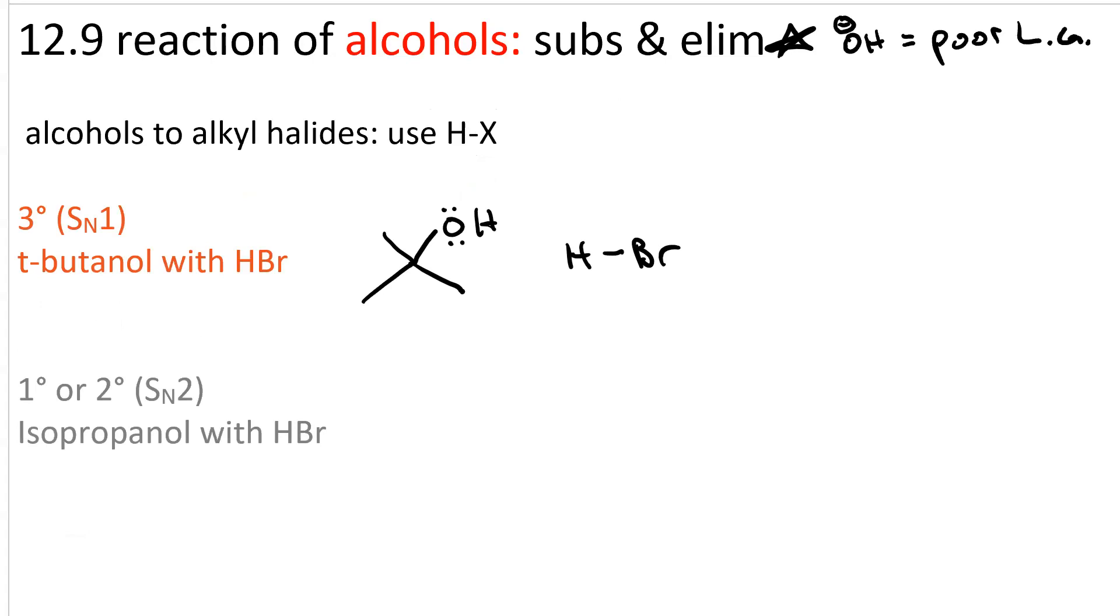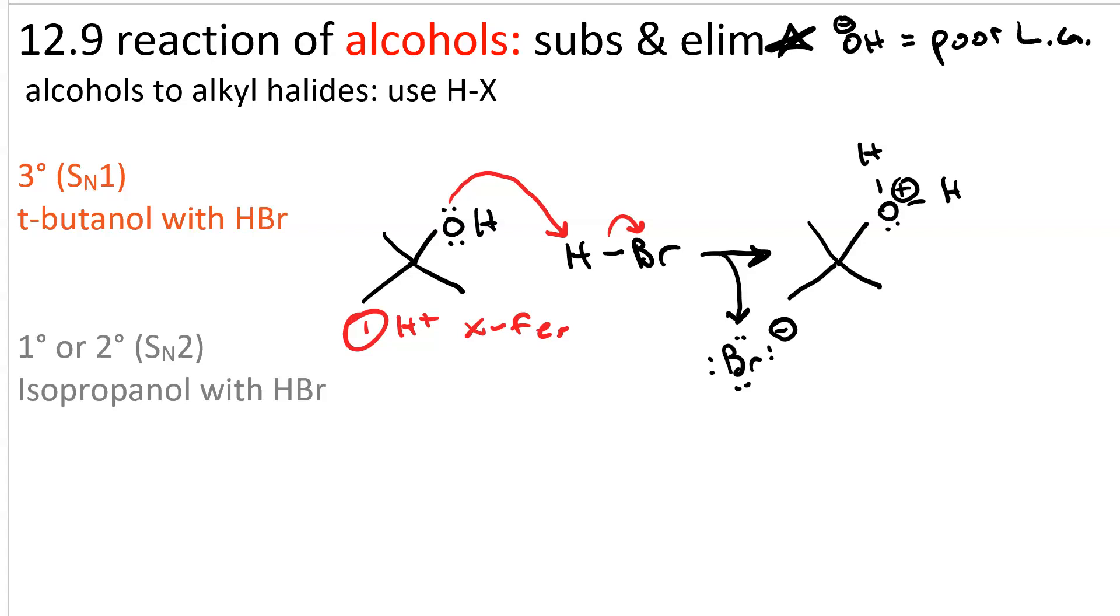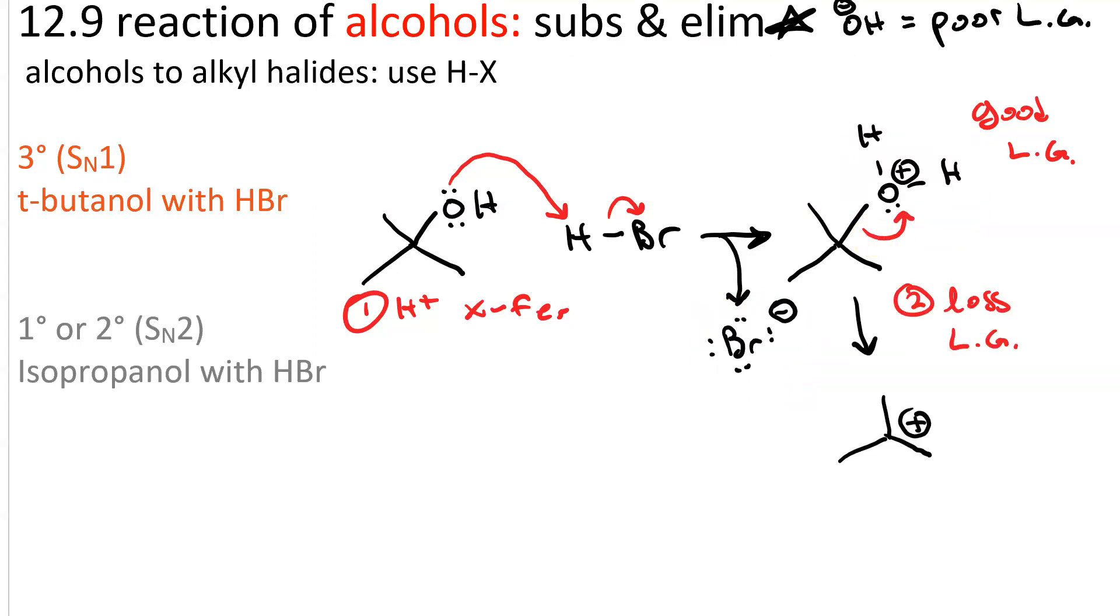Here is t-butanol, a tertiary alcohol. We'll react with HBr. This proton transfer reaction protonates the alcohol. So now we have water, which is a good leaving group. And the halide ion is also generated. That's going to be our nucleophile. But it can't do SN2 attack because our substrate is tertiary. So we have to do loss of a leaving group first. The loss of a leaving group only requires this one curved arrow. And now we've generated our nice stable tertiary carbocation.